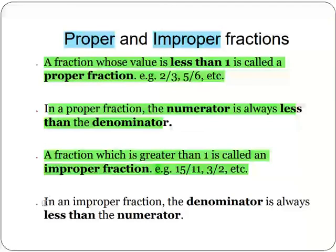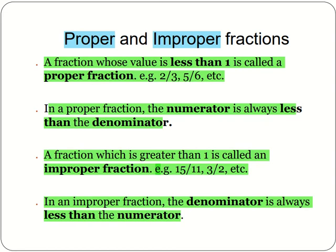In an improper fraction, the denominator is always less than the numerator. As you can see, in proper fractions, the numerator is less than the denominator, and in improper fractions, the denominator is less than the numerator, or we can say the numerator is greater than the denominator.